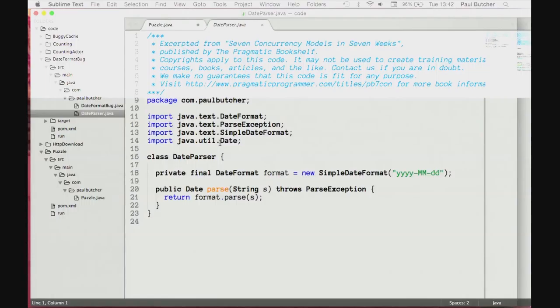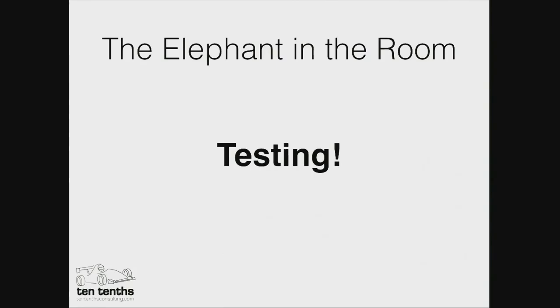And that brings us to what I think is really the most interesting part of this — the elephant in the room: testing. If you've got a piece of code as simple as those I've shown you today and you can't easily work out what they're going to do, how on earth do you know your code is correct? The answer is you know your code is correct by testing it. But how are you going to write tests that uncover some of these issues?